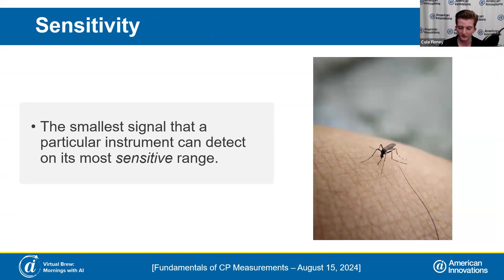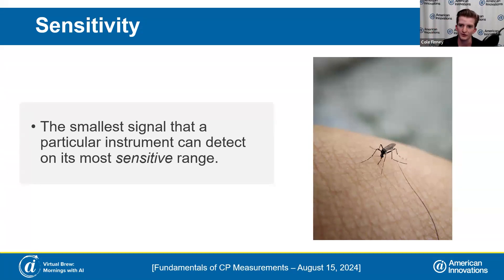The next one is sensitivity. Sensitivity is the smallest signal that your measurement device can detect across its most sensitive range. The human hand can capture varying degrees of signals, from something as large as a cell phone all the way down to a piece of paper. In reality, we can receive a signal as small as 40 micrometers — like a mosquito needle — which shows we have a wide range of sensitivity. Similarly, your device's sensitivity can be as small as micrometers and can capture that across a wide range of settings.